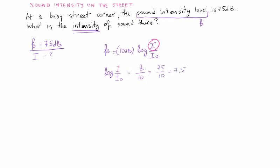Now to find I over I₀, let's take both sides of this equation to the 10th power. So I over I₀ equals 10 to the 7.5. From here I can find I equals I₀ times 10 to the 7.5.